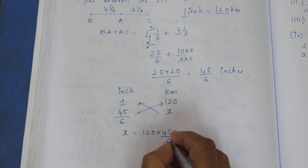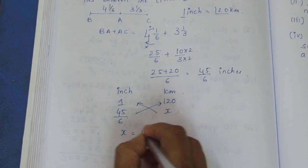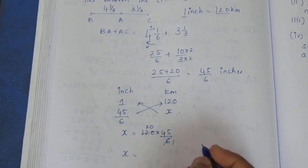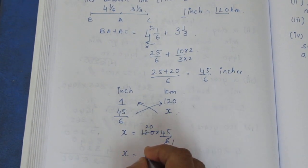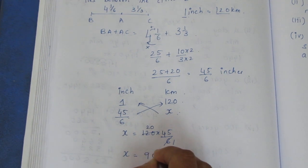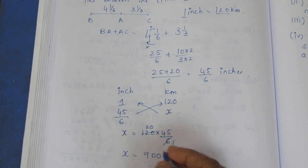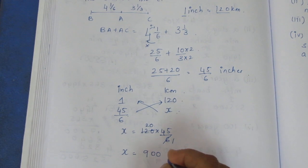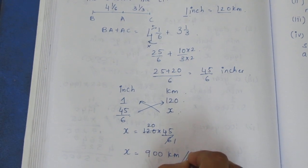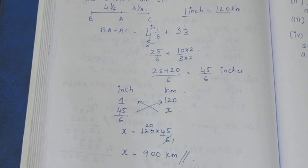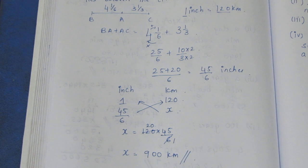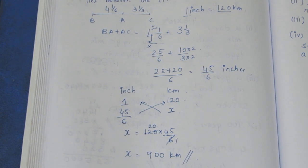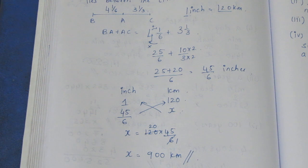Calculating: 120 divided by 6 equals 20, and 20 multiplied by 45 equals 900. So x equals 900 kilometers. The distance between the two cities B and C is 900 kilometers. Thank you.